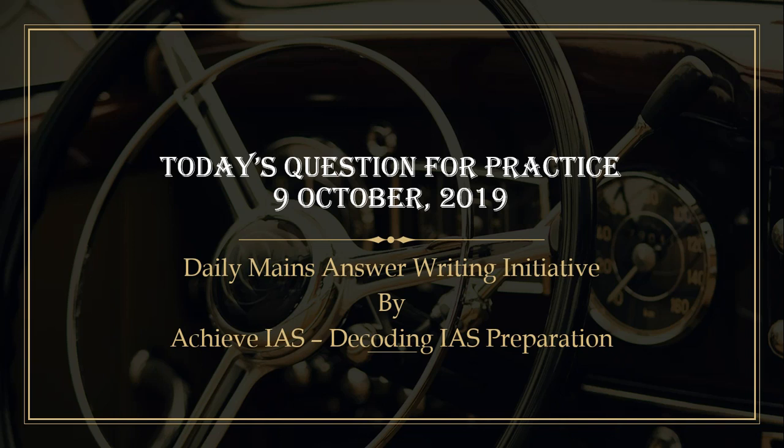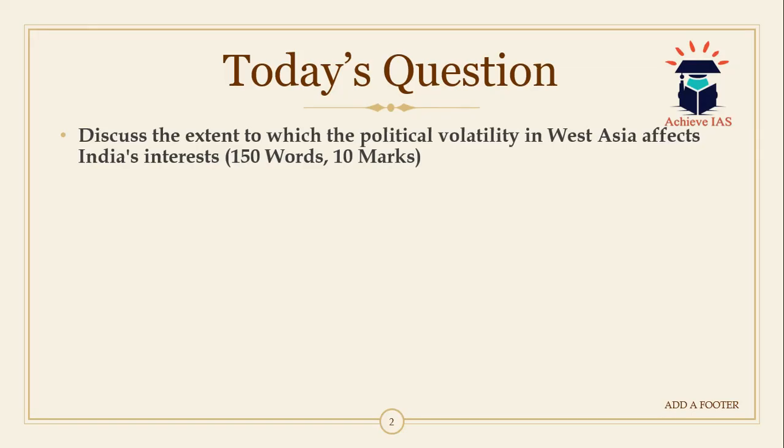As is clear from its name, in this series what we do is we daily give you a question of which you have to write the answer. So let's see what is the question for today — today is 9th October. The question is: discuss the extent to which the political volatility in West Asia affects India's interests. The word limit is 150 and maximum marks are 10.